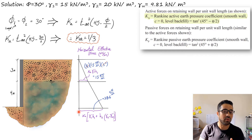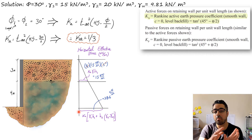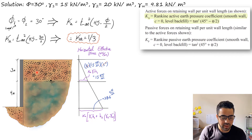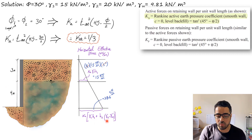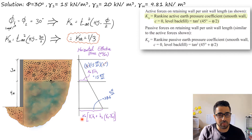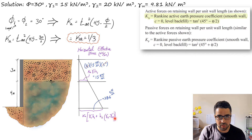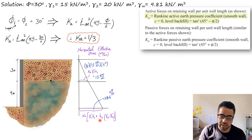Now for the second layer, we have water, so γ_effective = γ_saturated − γ_water. To find the stress at the bottom, we take the contribution from Layer 1 plus Layer 2, then multiply by Ka to convert to horizontal. Ka is only multiplied by the effective soil stress — you cannot apply Ka to the water pressure. The water pressure is calculated separately.